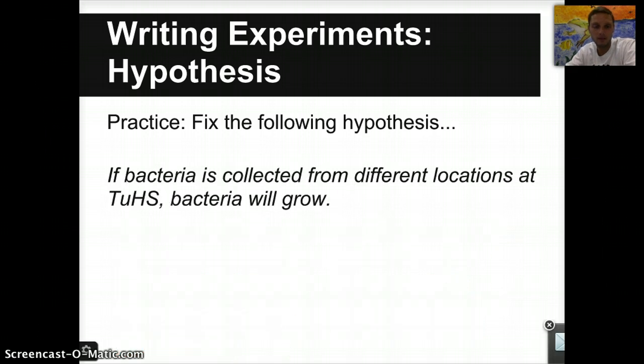Here's our second example, and this is one that we'll do in class for sure. If bacteria is collected from different locations at Tualatin High School, bacteria will grow. Take a look at this one. Pause the video, see if you can figure out and fix how this should be improved. Keep it in mind, no pronouns, very specific and measurable predictions for your independent and dependent variables.